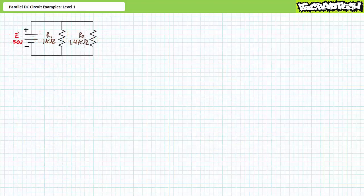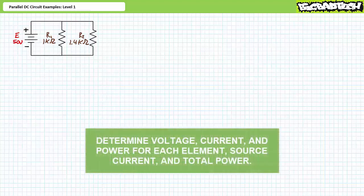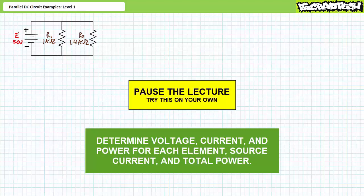Our next illustrated example features a 50-volt source in parallel with R1, a 1-kilohm resistor, and R2, a 1.4-kilohm resistor. We're again being asked to solve for the voltage drop across each element, the current through each element, the power dissipated by each element, the source current, and the total power. By all means, pause the lecture and try this on your own. If you're tracking, you should have obtained the following results.